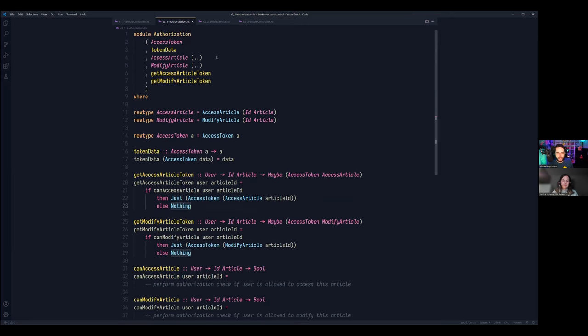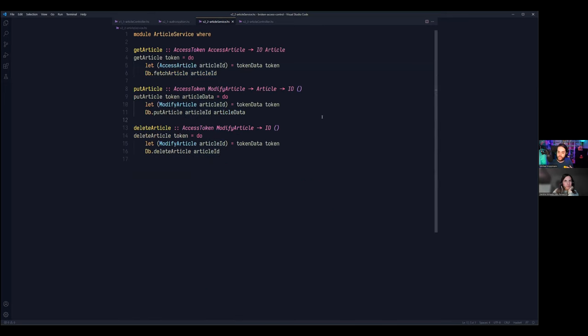Now let's look at the module definition for this. So the module definition, this is the export list. So these are the functions that are available outside in other modules when this module gets imported. For access article and modify article, for example, this dot dot thing here means that we export the constructors. So other modules can create values of this type and can unwrap them. That's why we don't have to provide some value extraction function or similar. But the constructor for access token is not exposed. So it's private. The only way to get an access token is by calling the get access article token or get modify article token function here. Note that the Boolean functions are also not exposed. But that's only half of the solution because the rest of our application does not expect any access tokens yet. So let's change that.